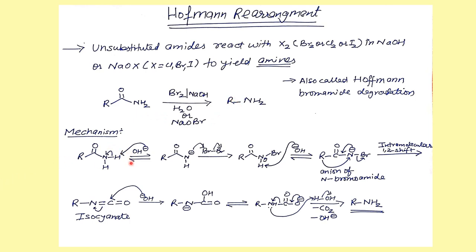The mechanism: NaOH (base) abstracts a hydrogen from the amide nitrogen, giving a negative charge, then bromine reacts to give the N-bromo amide. The base abstracts another proton to give the anion of N-bromamide. This anion undergoes an intramolecular 1,2-shift — the alkyl group migrates and bromine leaves. In situ, this generates an isocyanate. Since NaOH is present (nucleophile), it attacks the isocyanate; CO2 gas is released to give the desired amine.